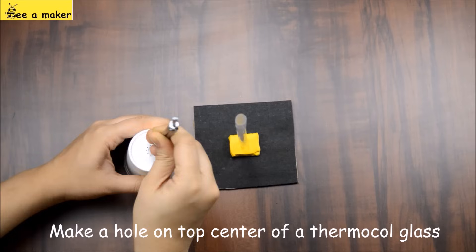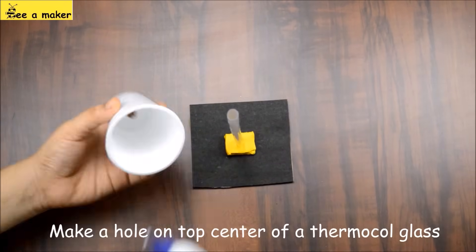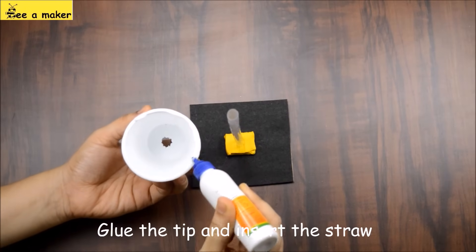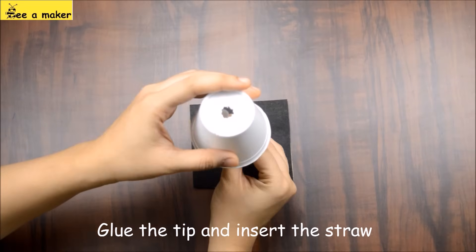Make a hole on top center of a thermocol glass. Glue the tip and insert the straw like this.